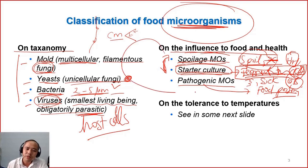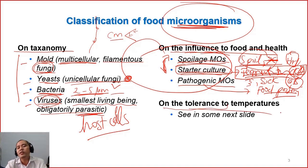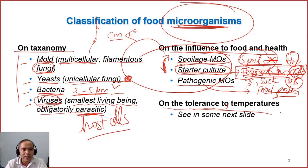We can also classify microorganisms based on their tolerance to temperatures. If they love to live at high temperature, low temperature, or average temperature, then we give them different names. We will see in some next slides how to classify them here.